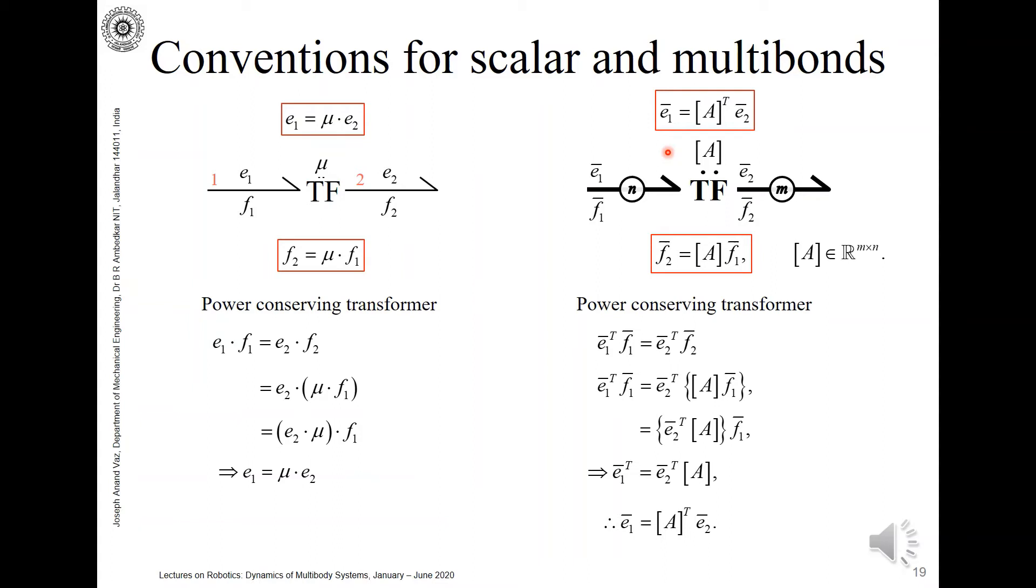So we started with the flow relationship and we arrived at the effort relationship automatically because of the power conserving nature of the transformer. The only point you should note here is that while the flow relationship was given as flow 2 is equal to A operating on flow 1, the effort relationship is given as effort 1 is equal to A transpose operating on e2. Note the transpose here.